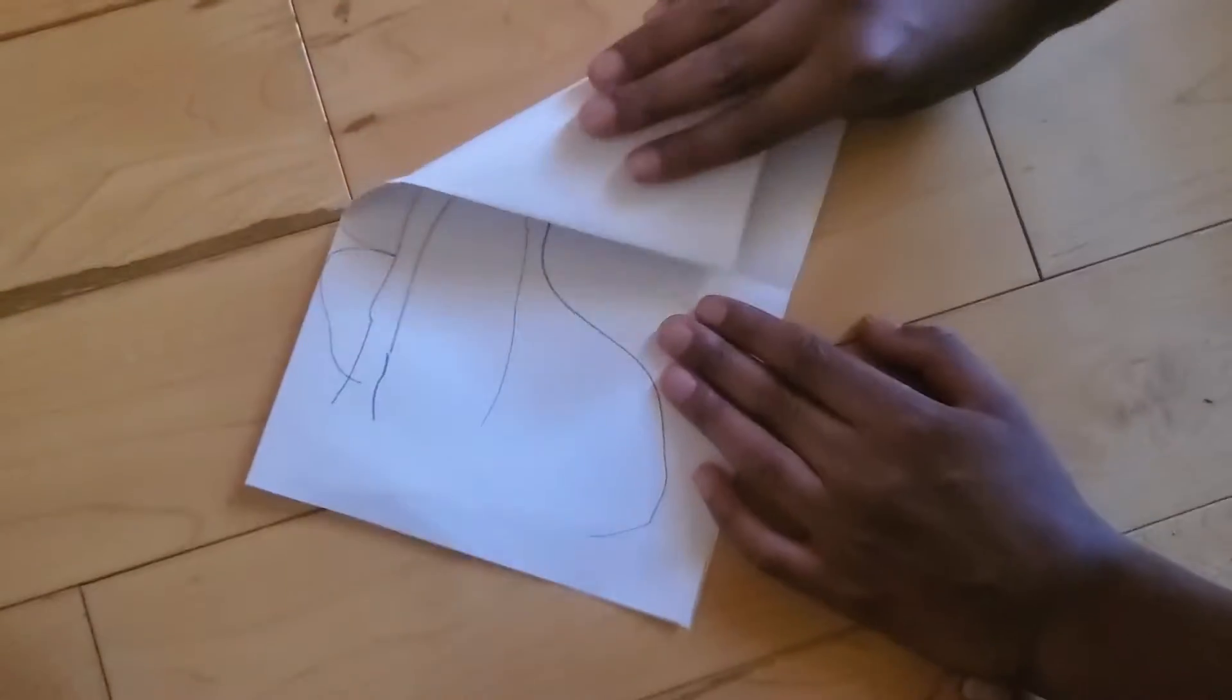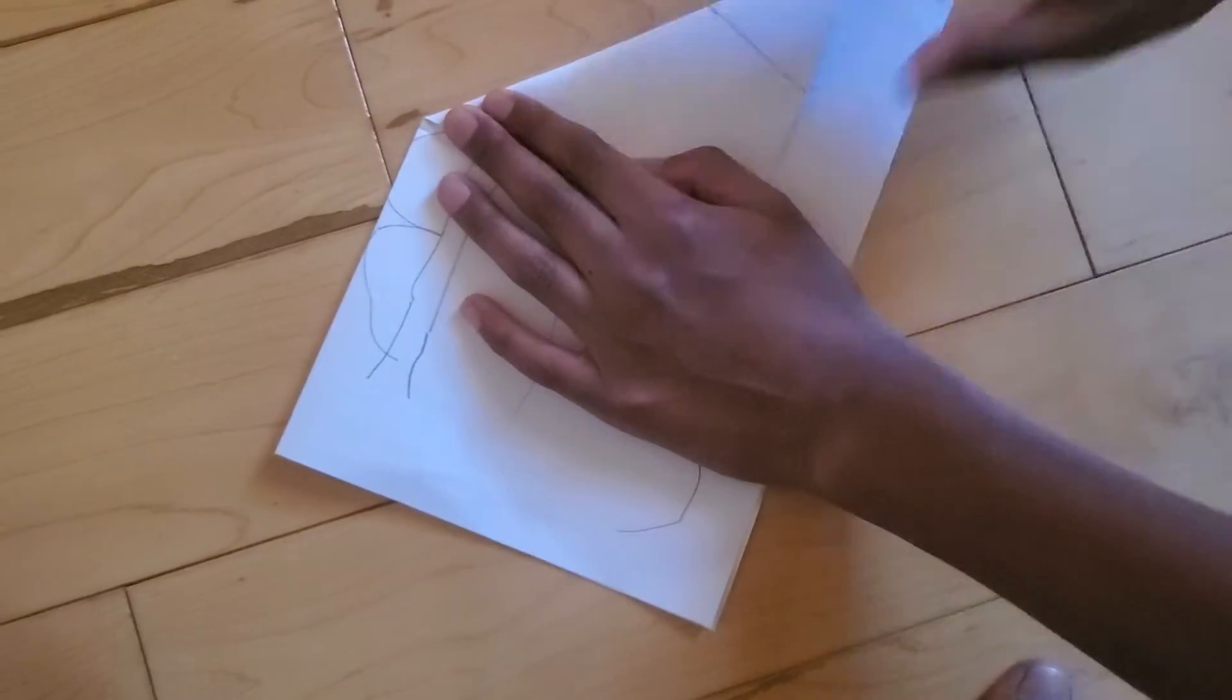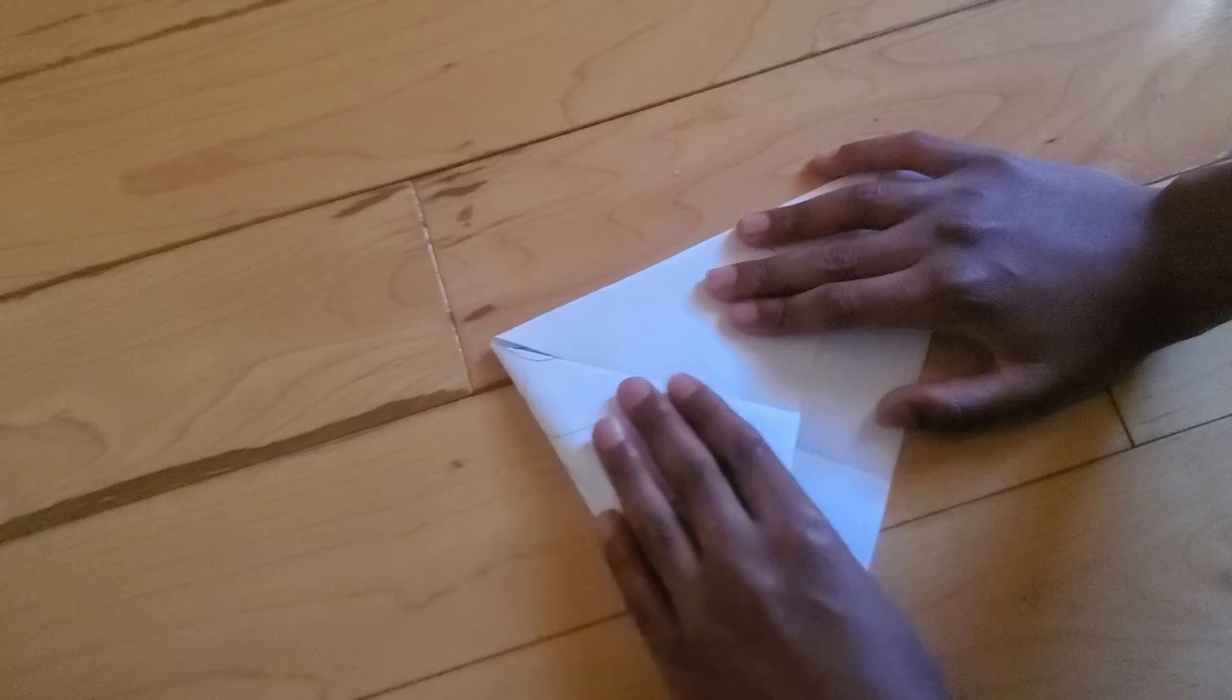So now you take the two corners and fold it to the line like that. And then you do the same on the other side.